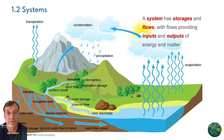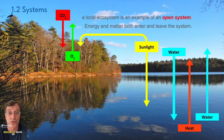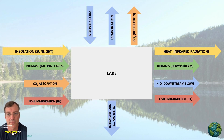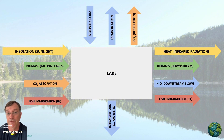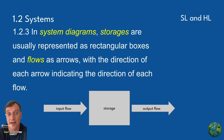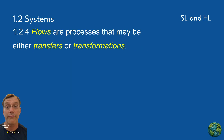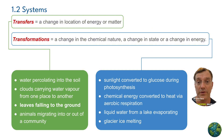Storages are like reservoirs holding matter or energy, while flows show how these resources move or change. Imagine a lake ecosystem: the lake itself is a storage for water, nutrients, and aquatic life, while rainfall, evaporation, and fish migration are flows in and out of that ecosystem. We can represent that ecosystem simply with a box for the storage and arrows showing what flows in and what flows out.